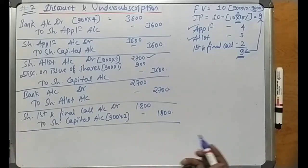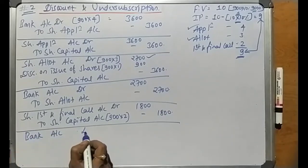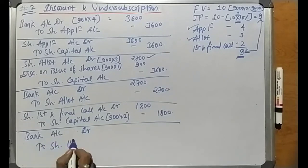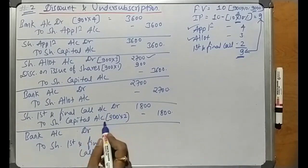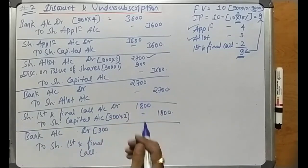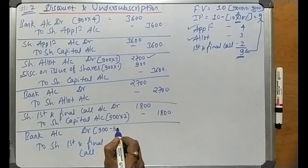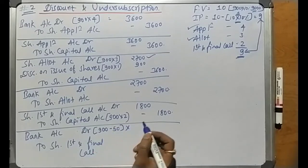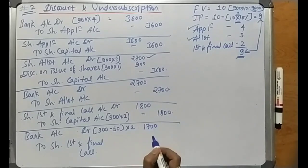Now the receipt entry for the first and final call: Bank Account debit to Share First and Final Call Account. All sums were received except the final call on 50 shares. So shares paid = 900 minus 50 = 850. At rupees 2 per share, the amount received is 850 into 2 equals rupees 1,700. So Bank Account Dr ₹1,700 to Share First and Final Call Account ₹1,700.